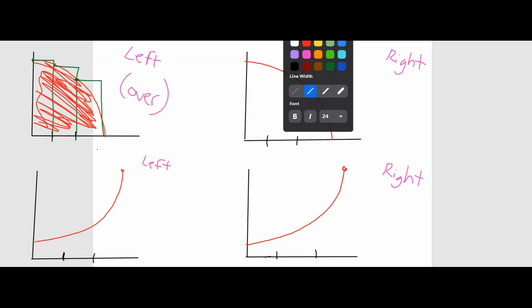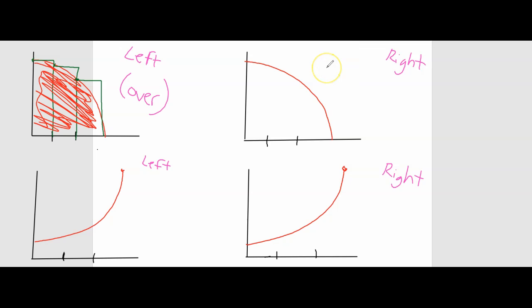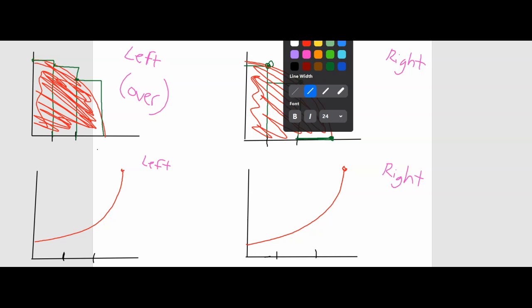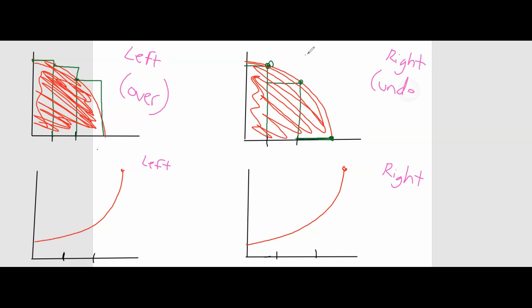Let's look at the same function, but doing a right Riemann sum. It's going to look something like this. This rectangle, for the right Riemann sum, actually has an area of zero. So clearly, this right Riemann sum is an under-approximation, because there is more area underneath the red function than there is underneath the green rectangles.